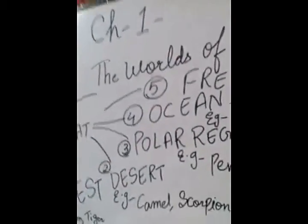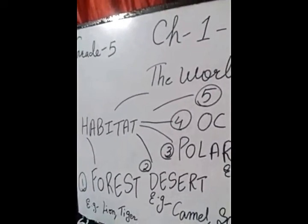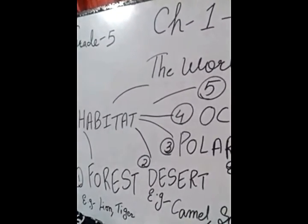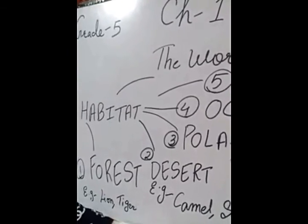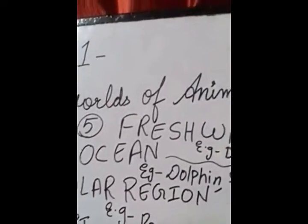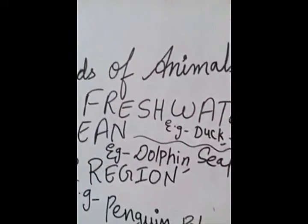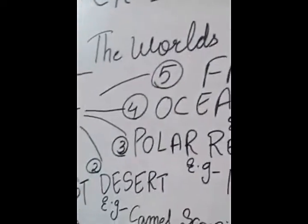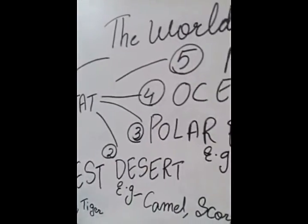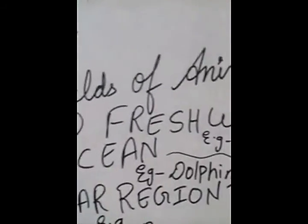So students, today we have seen the chapter: The World of Animals. We studied about habitat and the five types of habitats — forest, desert, polar region, ocean, and freshwater — along with examples of each. Your homework is to learn the definition of habitat and all the types of habitats, and note them down in your copy. Thank you and have a nice day!